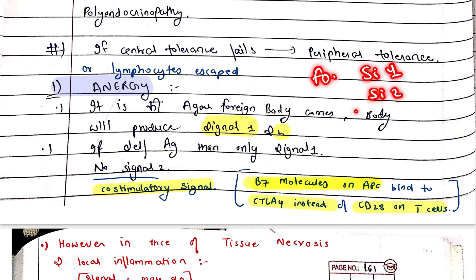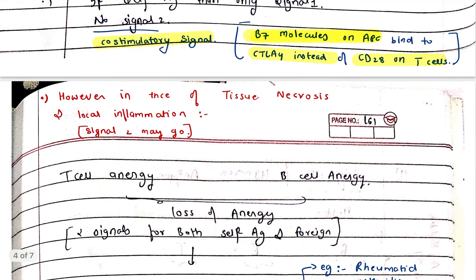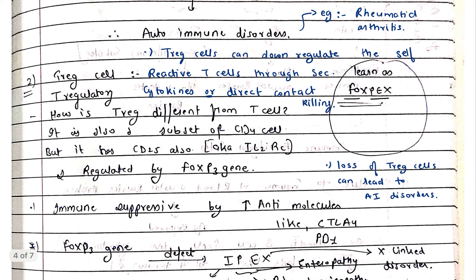When Signal 1 is given but Signal 2 is not, the immune response will not proceed further. Next are T regulatory cells. T regulatory cells can downregulate self-reactive T cells either by secreting cytokines or by directly contact-killing those T cells.